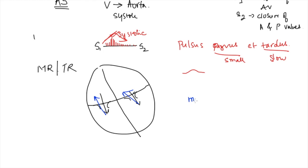MR commonly occurs due to myocardial infarction. The chordae tendineae are attached to papillary muscles; when there is ventricular infarct, there may be papillary muscle infarct as well. The chordae tendineae then cannot hold the valve leaflets properly, they become flabby and dysfunctional, resulting in reverse flow of blood.